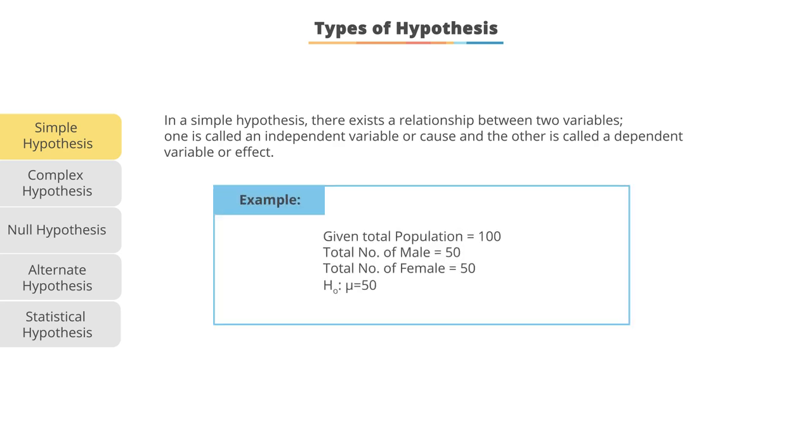What you'll often see is we don't know the given total population usually, but we try to understand that. And so here we have H₀, which is the null hypothesis, saying the population mean is equal to 50. And we say there's total number of male people in the population is 50 and the total number of female people in the population is 50.